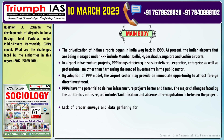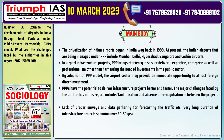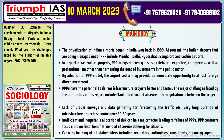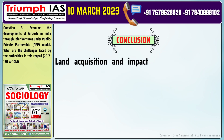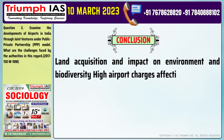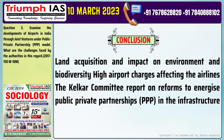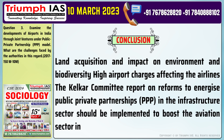Number 5: Lack of proper surveys and data gathering for forecasting traffic. Very long duration of infrastructure projects spanning over 20–30 years. Number 6: Inefficient and inequitable allocation of risk can be a major factor leading to failure of PPPs. PPP contracts focus more on fiscal benefits instead of service delivery for citizens. Number 7: Infrastructure sector reforms should be implemented to boost the aviation sector in India.